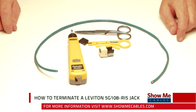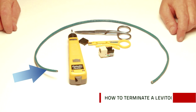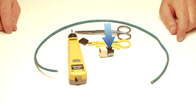The materials needed for this installation are CAT-IV cable, a Leviton 5G108 series jack, an impact punch-down tool, rotary cable stripper, and technician scissors.